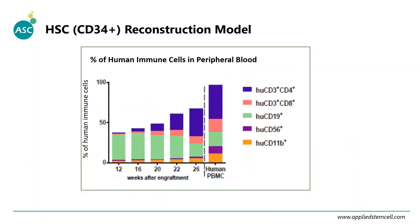This figure shows how the CD34-humanized mouse model changes over time. After three to four months following hematopoietic stem cell reconstruction, the percentage of immune cells in mouse blood becomes very similar to human PBMC. Almost all immune cell components can be detected in the mouse blood, including CD4 T cells, CD8 T cells, B cells, NK cells, and myeloid cells.